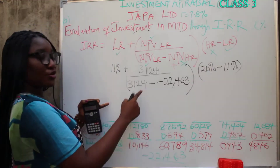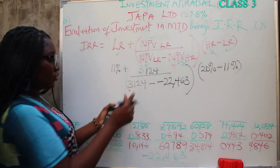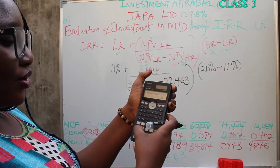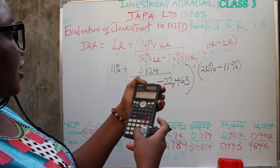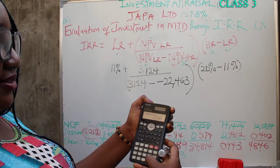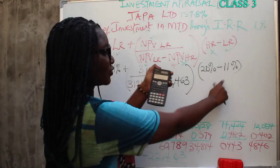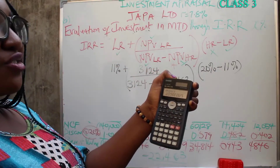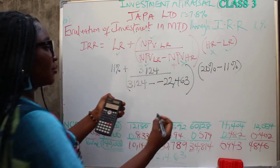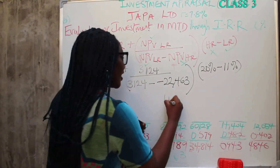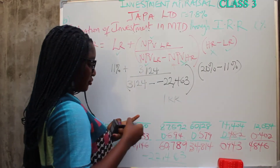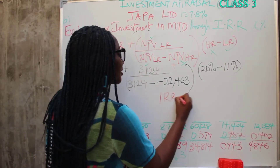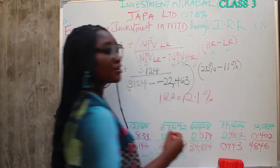Put this into your calculator. Start by dismantling the denominator: 3,124 minus minus, that's plus 22,463. Then 3,124 divided by answer, multiply by 9% (which is 9), then add 11%. That gives 12.09%, which is approximately 12.1%. So your IRR is 12.1%.